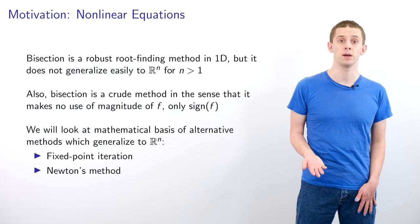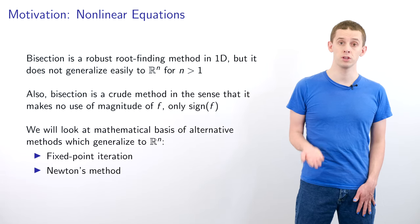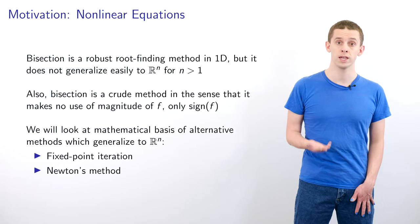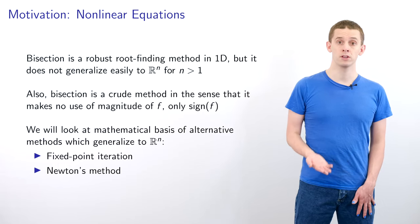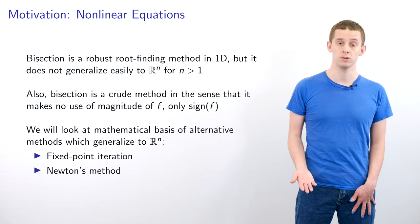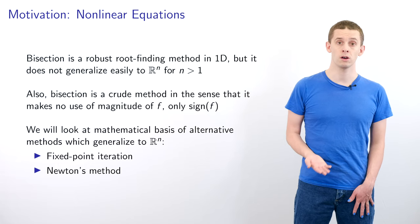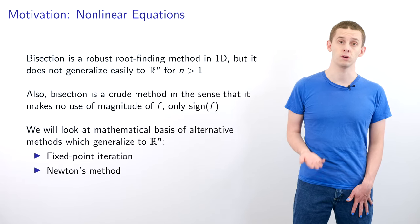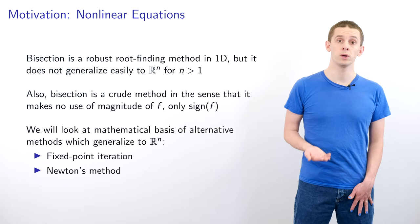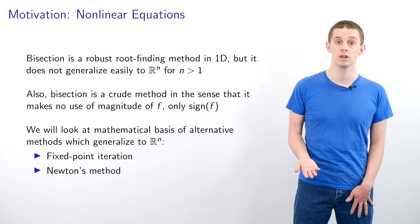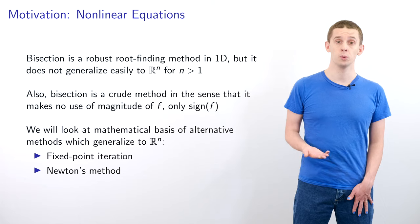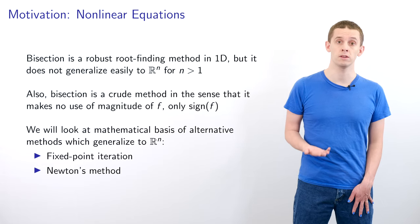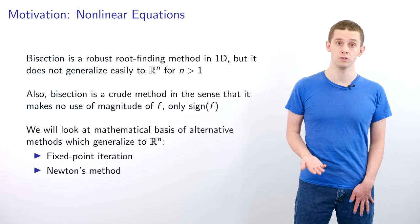Bisection is a robust root finding method in one dimension. It has the advantage if we have a continuous function f and we know that f is negative at one point and f is positive at another point then bisection is guaranteed to find a root. However, bisection doesn't generalize easily to two or more dimensions. In addition, bisection is rather crude since it only relies on the sign of the function evaluation and it doesn't incorporate any information about the magnitude of that function evaluation. In this unit we're going to look at the mathematical basis for several alternative methods that will generalize more easily to n dimensions. We're going to look at the fixed point iteration and also at Newton's method and in some cases we'll see that these methods can give us better convergence than the bisection method.